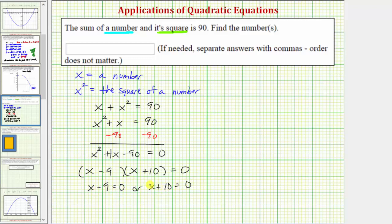Solving these two linear equations for x here, we'd add nine to both sides, giving us x equals nine. Or solving for x here, we subtract 10 on both sides, we have x equals negative 10.